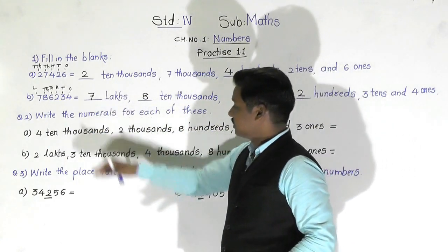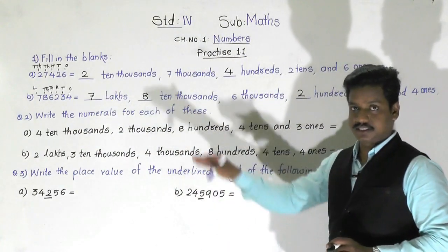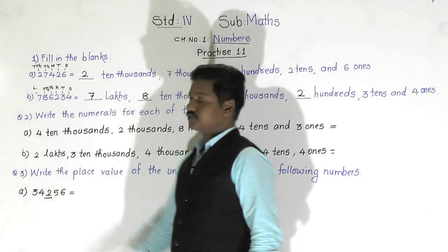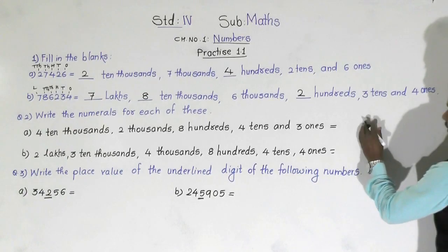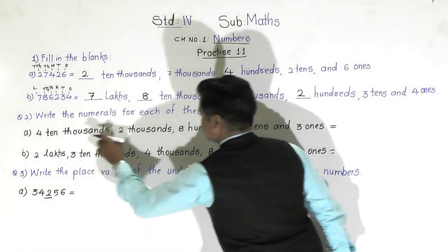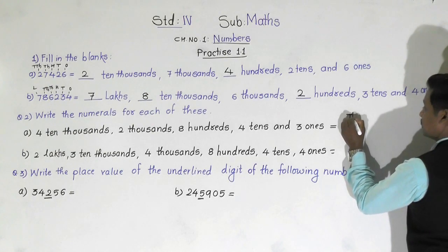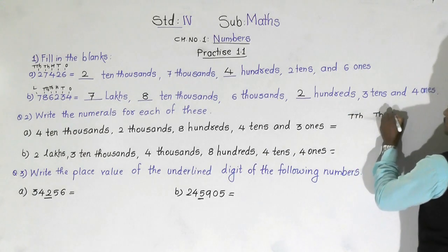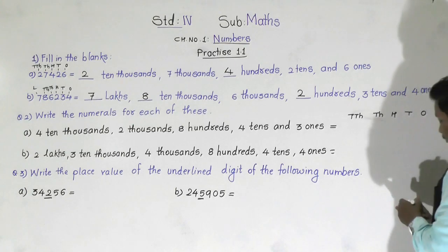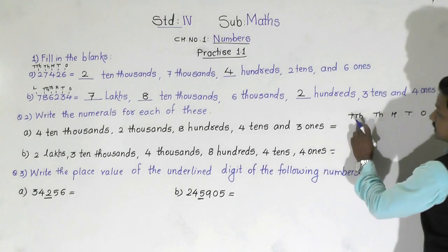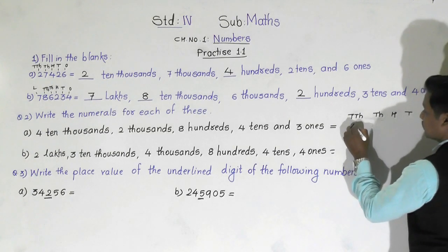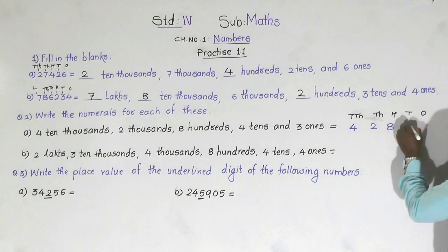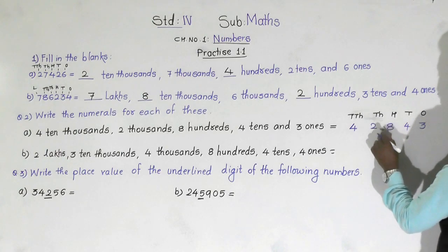Here the digits with their places are given and we have to write a numeral. We will arrange places from highest to lowest: ten thousands, thousands, hundreds, tens, and ones. At the ten thousands place there are four, at thousands two, at hundreds eight, at tens four, and at ones three ones. So we get the number forty-two thousand eight hundred forty-three.